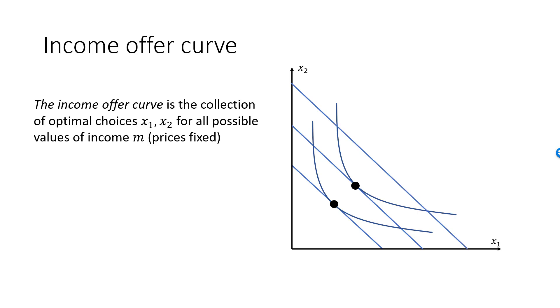Here I have marked the third optimal bundle at an even higher level of income. I could keep on doing the same thing, identifying optimal bundles for various levels of income. If I trace out all the optimal bundles, I will get a curve called the Income Offer Curve, drawn in red.